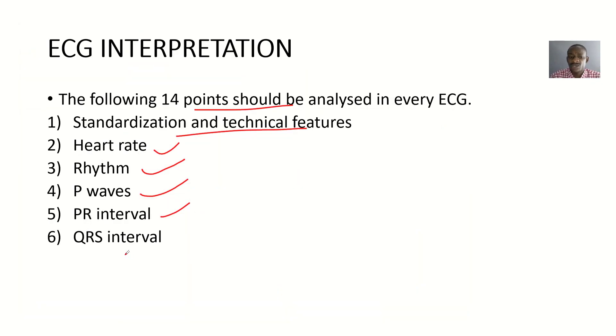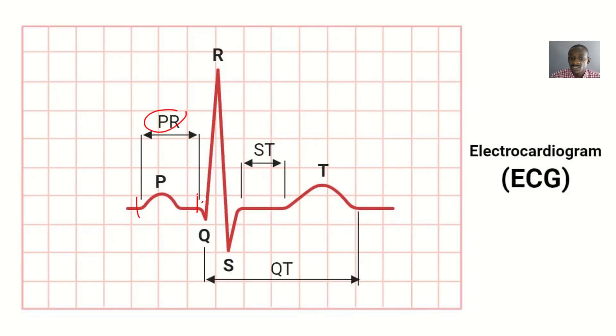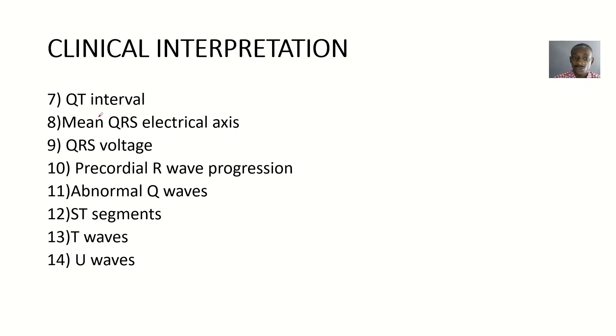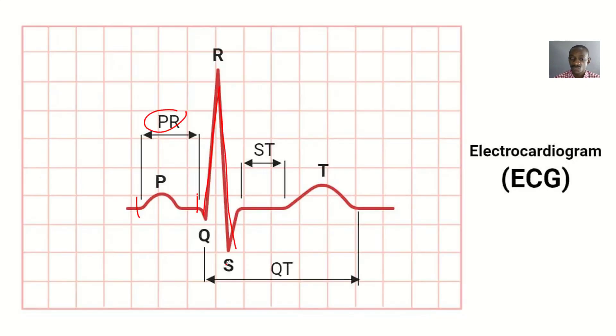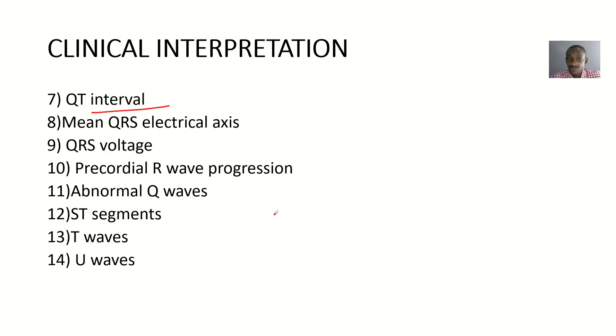Then look at the QRS interval—is it looking normally like the QRS complex or is it looking like something else? Then look at the QT interval, which is from the Q to the ending of the T wave. Then take the mean QRS electrical axis.